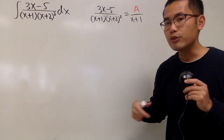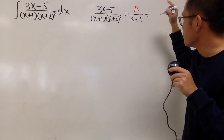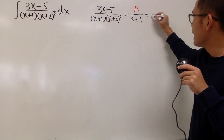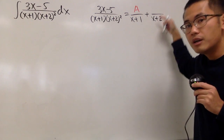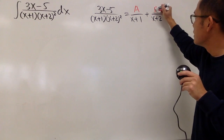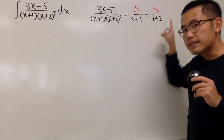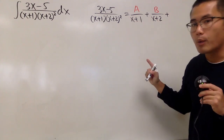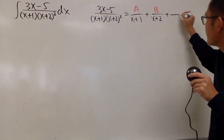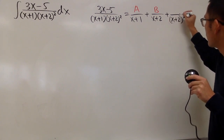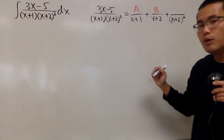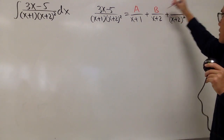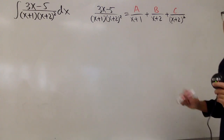Because of the repeated factor, we have to build out the power. This is linear inside, so we have x plus 2 in the denominator, and since it's linear the numerator has to be a constant — call it B. That's the second term. Then the third term builds out to the second power: x plus 2 squared on the bottom, and since we're building the powers the top stays the same kind — so that's also a constant C.